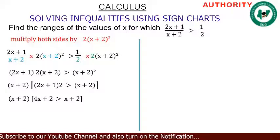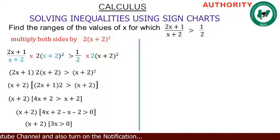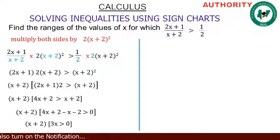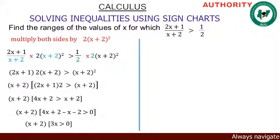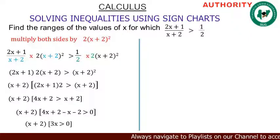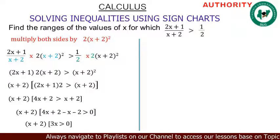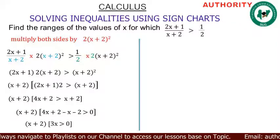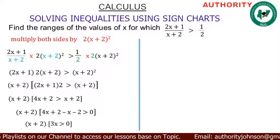Now inside the big bracket we have 4x + 2. Let's take all the terms on the right to the left hand side: bring x over as minus x, bring 2 over as minus 2. So 4x minus x gives 3x, and 2 minus 2 gives zero. That means what we have in the big bracket is 3x greater than zero.